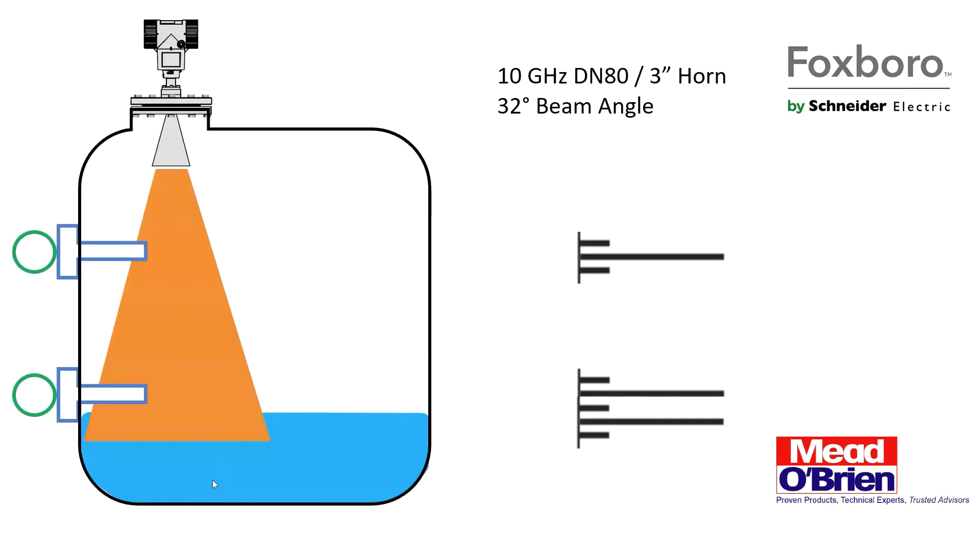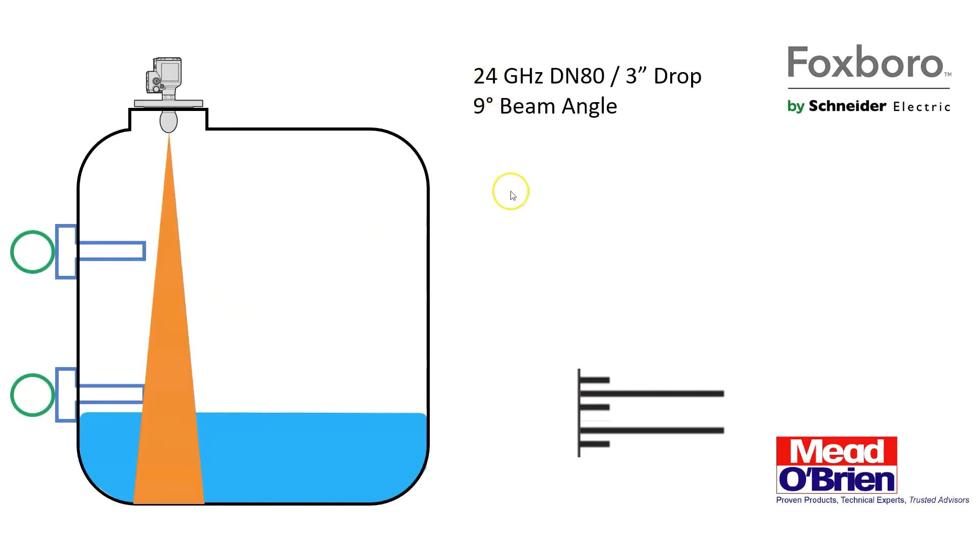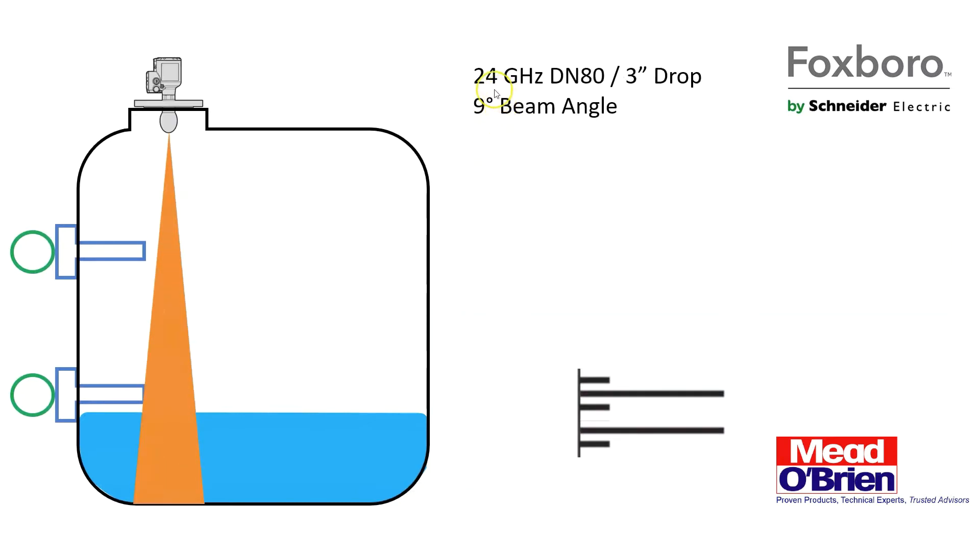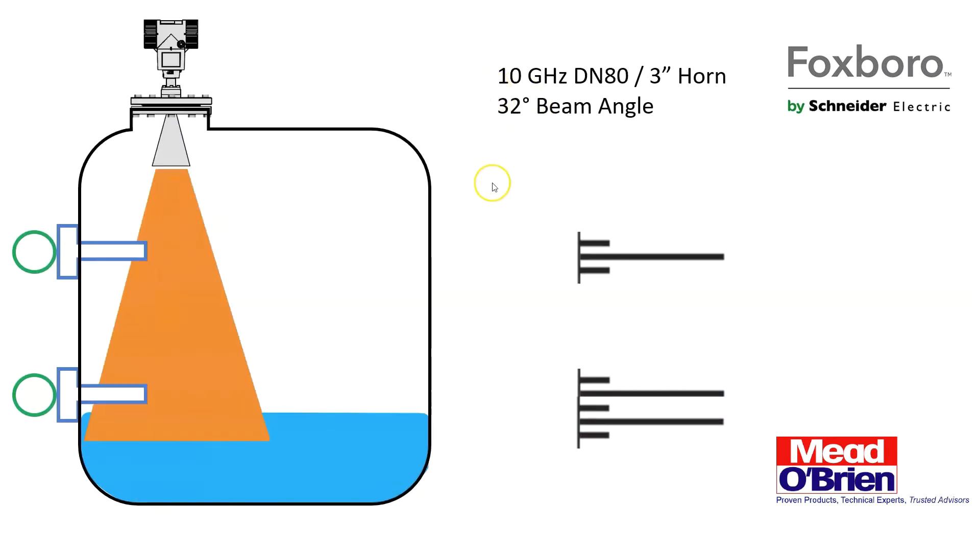When you look at the market today, I see three primary frequencies of radar: 10 gigahertz, 24 gigahertz, and 80 gigahertz. These gigahertz may fluctuate a little bit each way - 77 gigahertz, I've seen 26 gigahertz, 8 to 12 gigahertz, things like that. But these are just for general purposes, three different frequencies of radar.